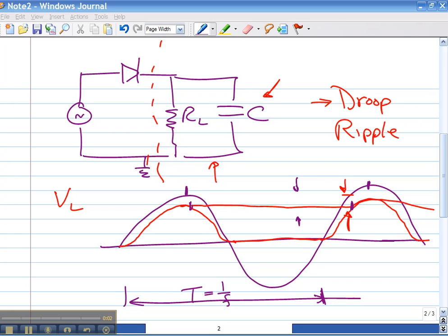Okay, so we're looking at the rectifier with smoothing, and we're trying to come up with a simple way of estimating the amount of droop or ripple that occurs in each cycle of the input voltage.